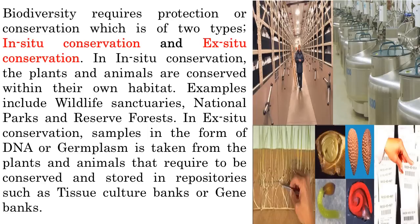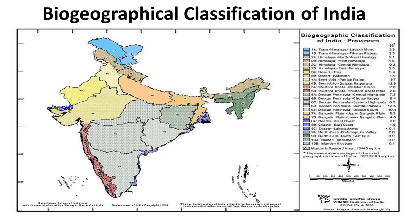One other aspect of this unit includes the biogeographical classification of India. Geographical regions of India are each unique in their composition with respect to biodiversity. They include regions such as the Trans-Himalayan region, the Western Ghats, the Deccan Peninsula, the Gangetic Plains and the islands such as the Andaman and Nicobar Islands.